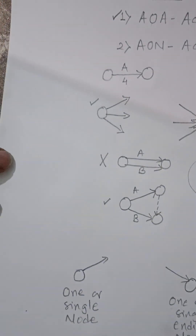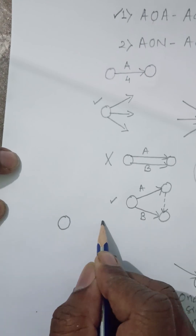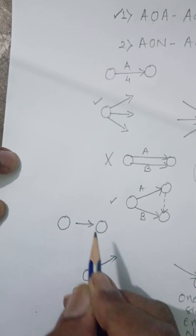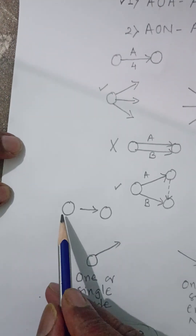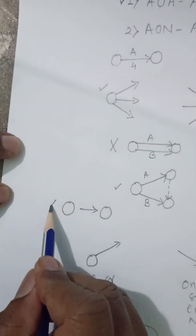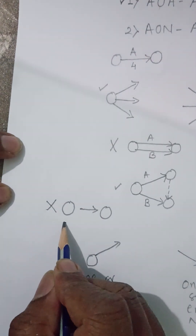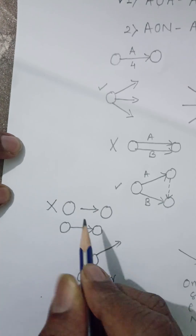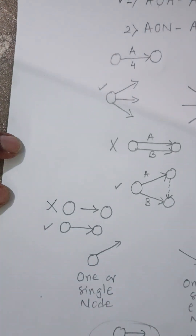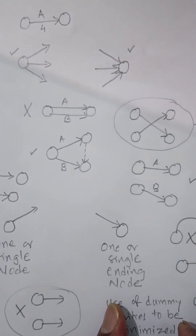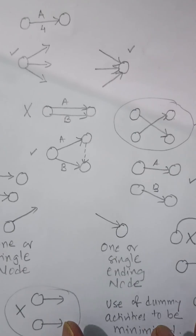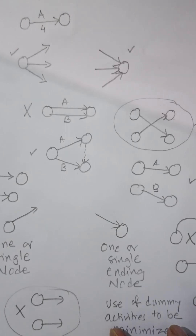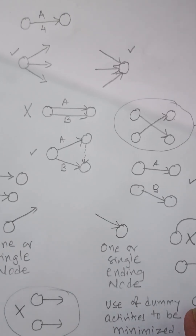Similarly, you should not have a hanging arrow — this is a very wrong way of showing an activity. The correct way is to always start an arrow from one node and end it in another node. These are the right ways and wrong ways of doing Activity on Arrow. In the next video, we will take an example and learn how to draw an Activity on Arrow diagram.